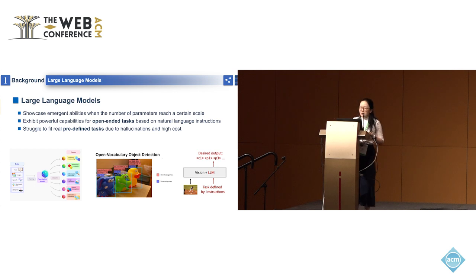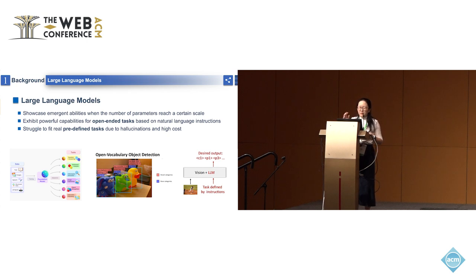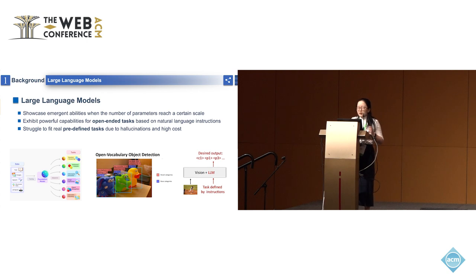For example, in the computer vision area, a traditional object detector can only identify that these three items are toys. But an open-vocabulary object detector can identify that the left one is a blue elephant, also a toy elephant, also a blue toy — and the right one is a yellow toy and also a toy duck. So it's easy to generalize to new categories. Further, given an image and a task defined by specific instructions, a vision LLM model can respond to image details.